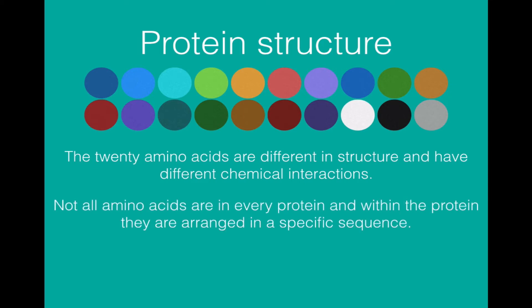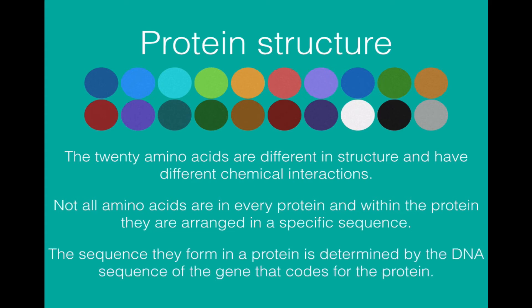Every protein won't have all 20 amino acids. Proteins can be hundreds of amino acids long but they don't all have to have all 20 in them. Within that particular protein they can be arranged in a particular sequence. The sequence they form in a protein is determined by the DNA sequence of the gene that codes for that particular protein.